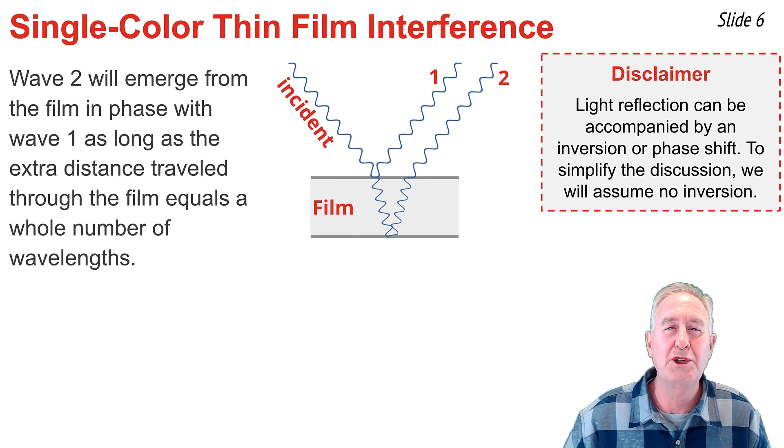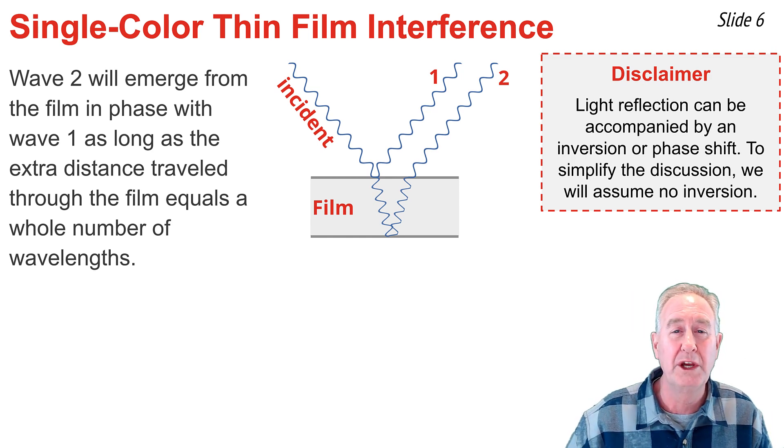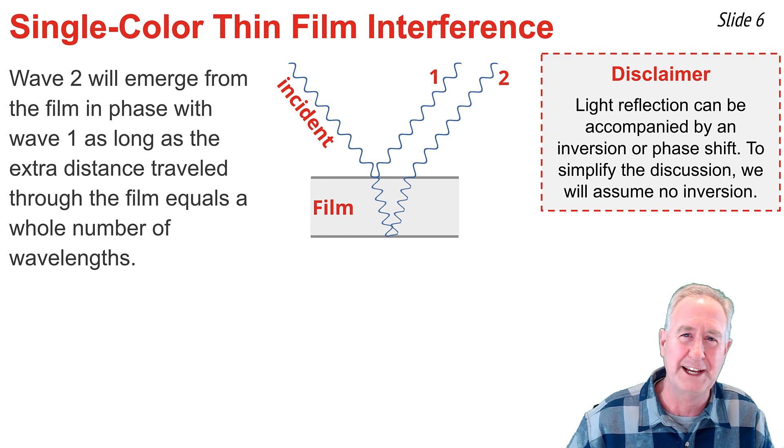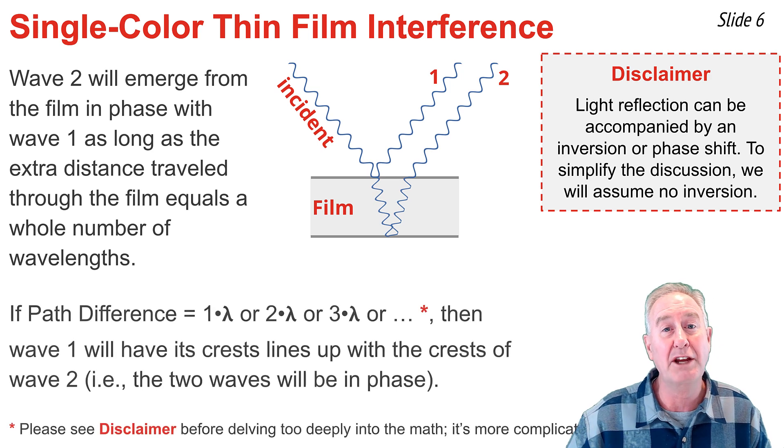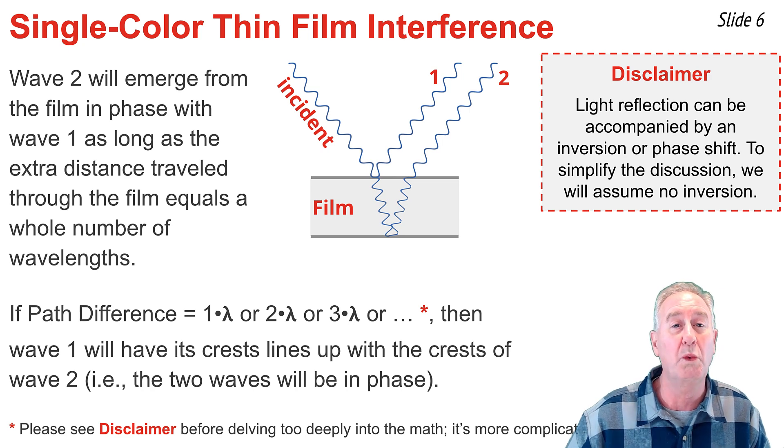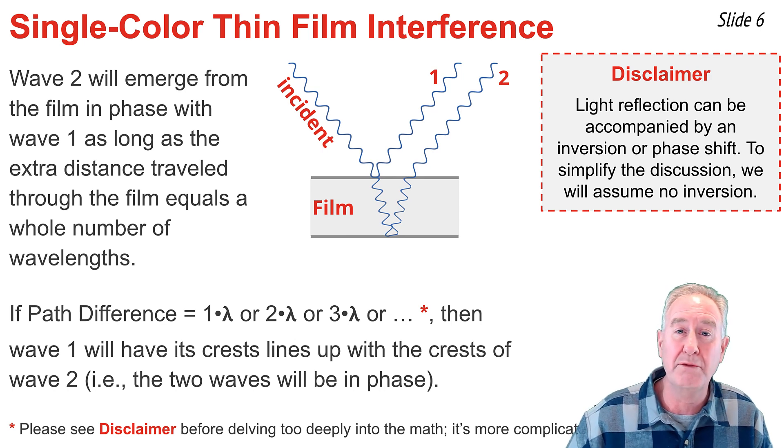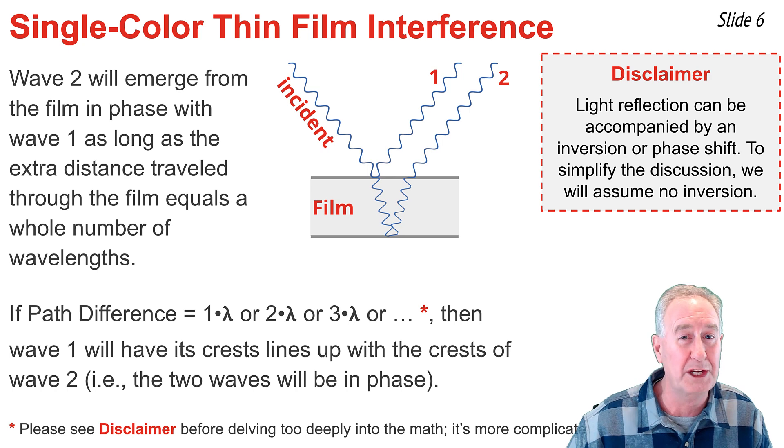So let's discuss this condition 2 in a little bit more detail. I can say that wave 2 will exit the film and be in phase with wave 1, as long as the extra distance traveled by wave 2 is equal to a whole number of wavelengths. I can express this statement as an if-then statement by saying, If the extra distance traveled by wave 2, sometimes called the path difference, is equal to one wavelength, or two wavelengths, or three wavelengths, etc., then the crest of wave 2 will be aligned with the crest of wave 1, and constructive interference will occur, intensifying the specific color associated with that wavelength.